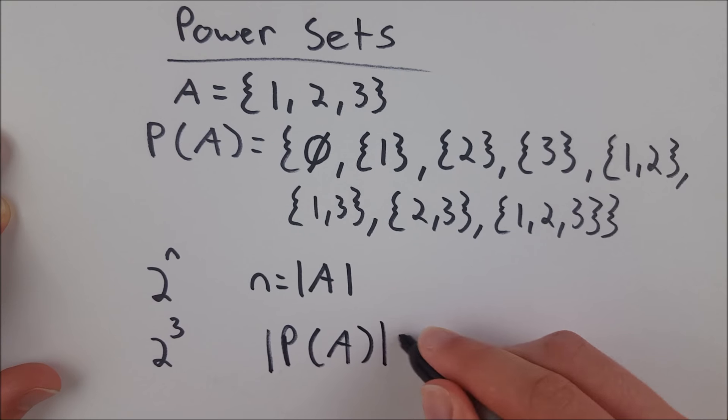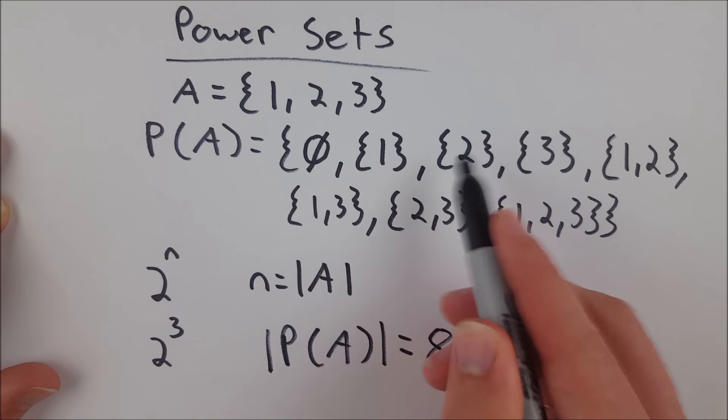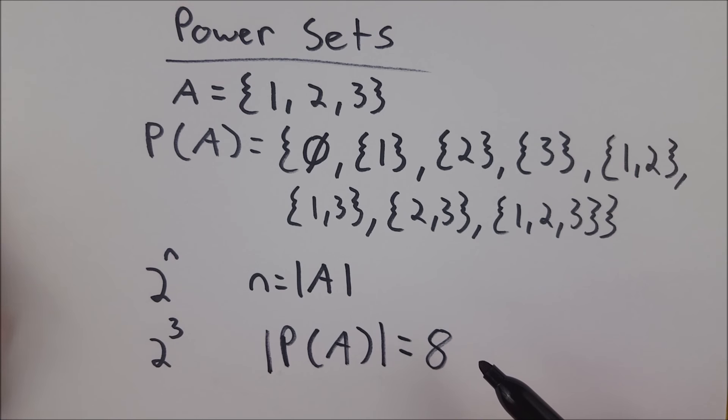Because again, the power set is the set containing all subsets. You see here, one, two, three, four, five, six, seven, eight. That checks out A-OK, the cardinality of our power set is 8 as we would expect.